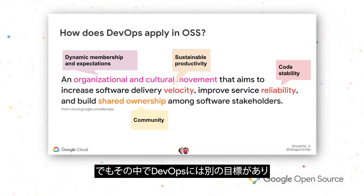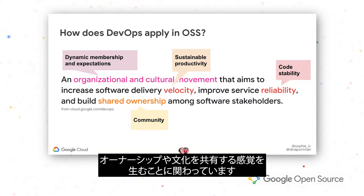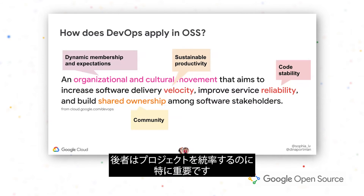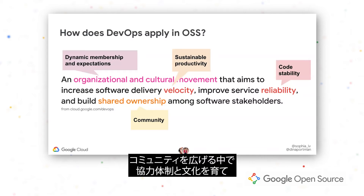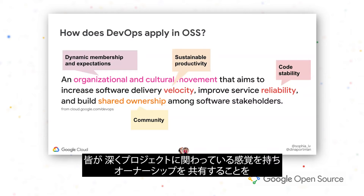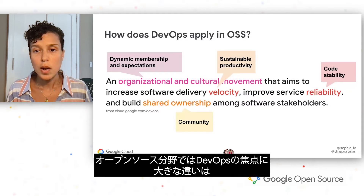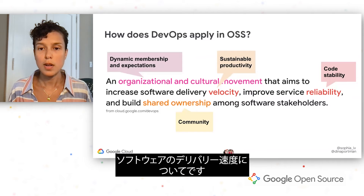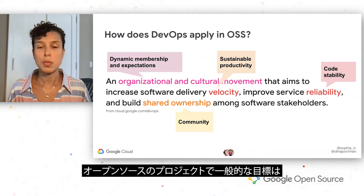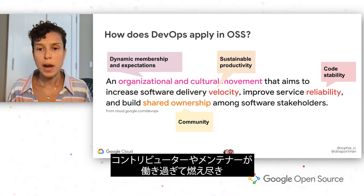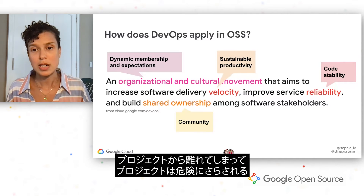Within that, and the other goals in DevOps, there are definitely some commonalities around improving and delivering reliable and stable code, and around creating a sense of shared ownership and culture. This latter point is even more important for project leadership because there isn't that company incentive bringing folks together — they have to foster this collaboration and culture within their extended community. One key difference in the open source space is around software delivery velocity. A more common goal amongst open source projects is sustainable productivity: thinking about reducing the chances that your contributors or maintainers get overworked, burn out, and then leave the project, putting the project at risk.